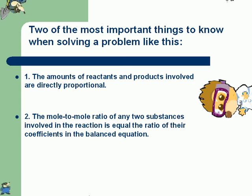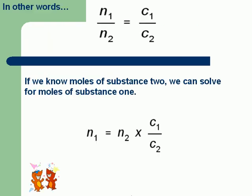And 2. The mole-to-mole ratio of any two substances involved in the reaction is equal to the ratio of their coefficients in the balanced equation. In other words, moles of substance 1 over moles of substance 2 equals coefficient of substance 1 over coefficient of substance 2.